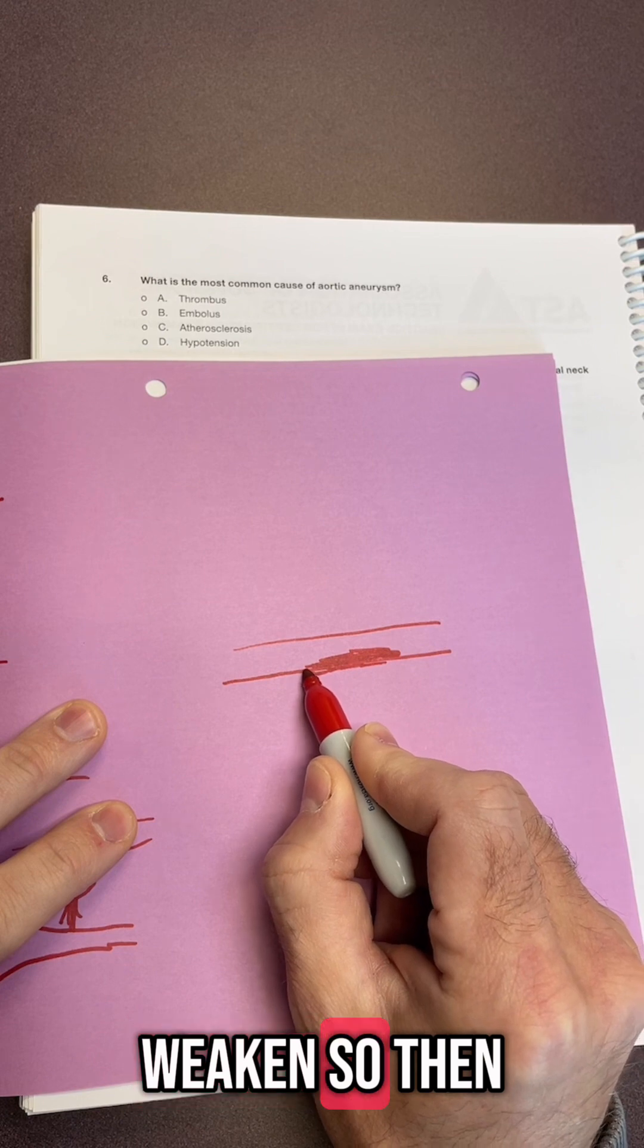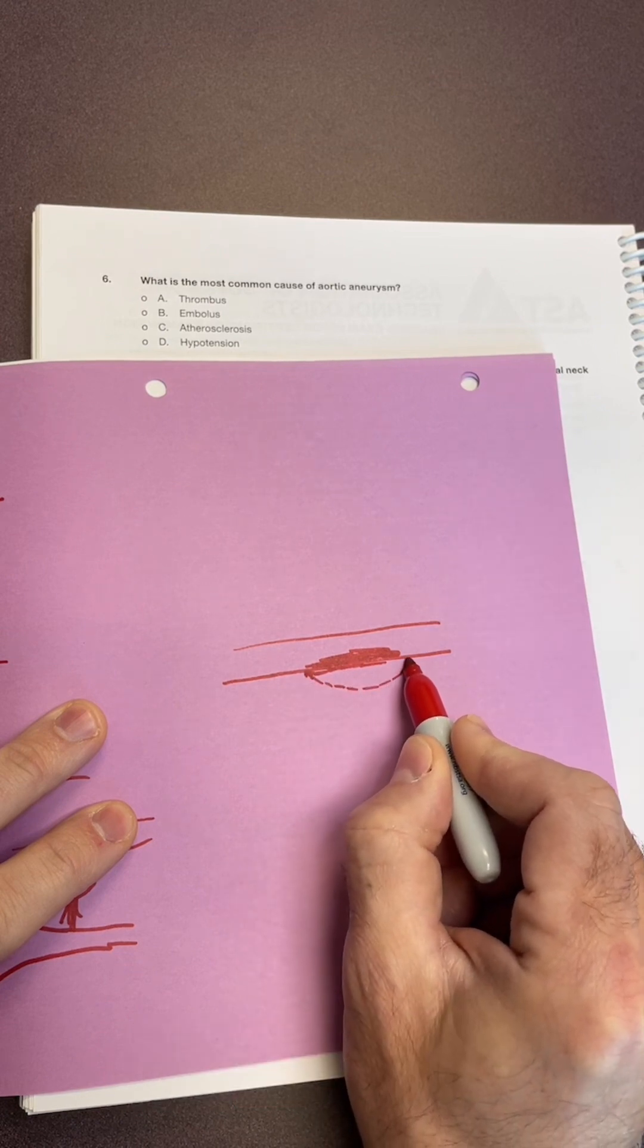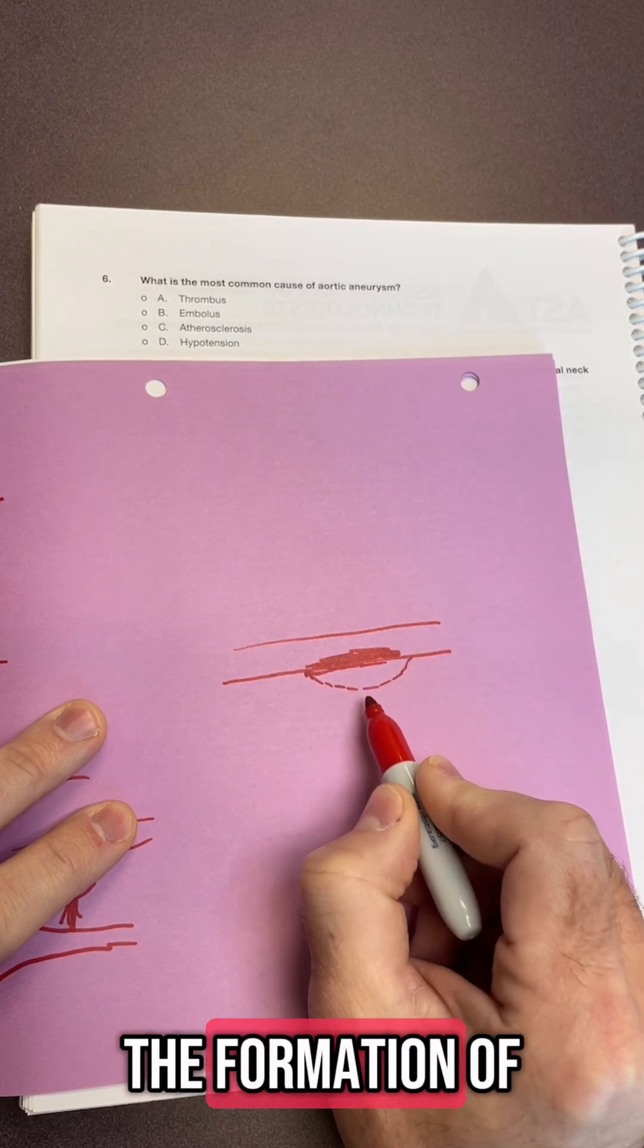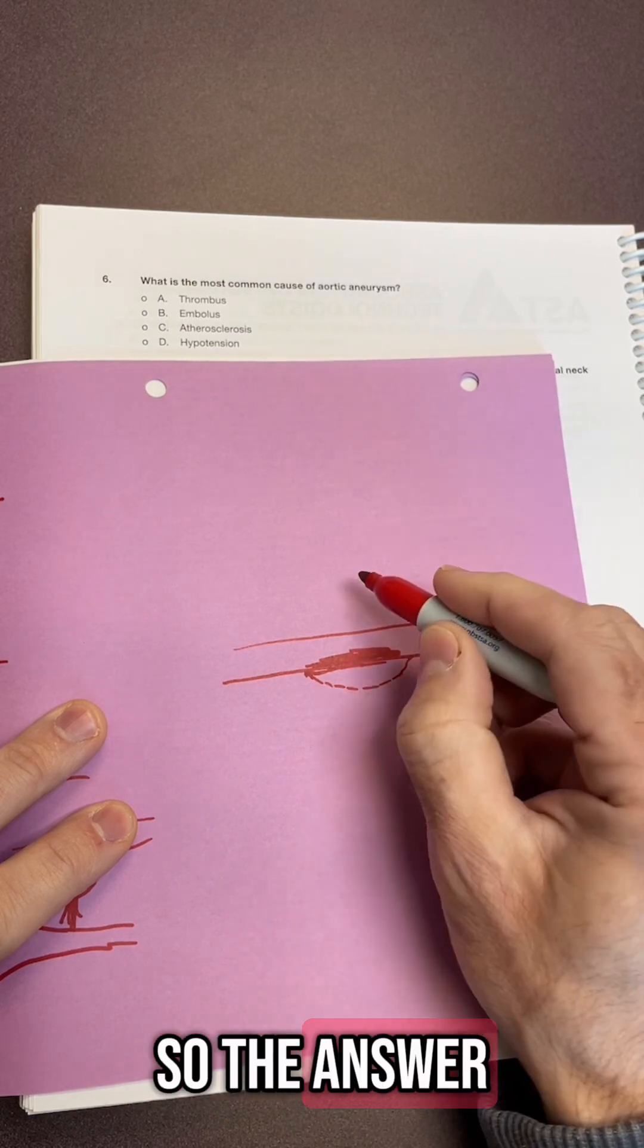It starts to weaken. So then you get a bulge and that causes the formation of your aneurysm. So the answer is C.